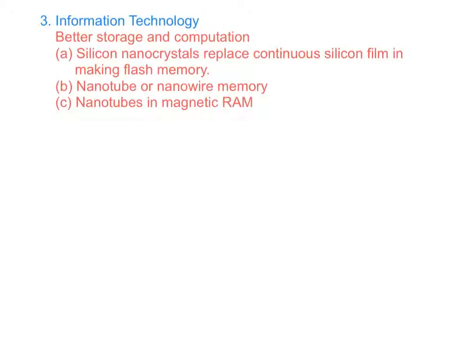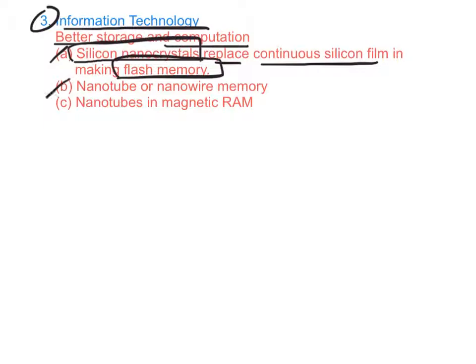Another field of application of nanotechnology is in information technology. Nanomaterials can produce better storage and computation power. A: silicon nanocrystals are used to replace continuous silicon film in making flash memory. B: nanotubes or nanowires are used in memory systems. C: nanotubes are used in magnetic RAM.